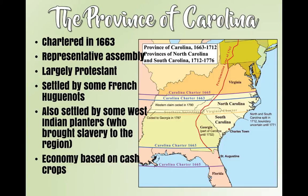Let's talk about the Province of Carolina. The Carolinas — it's basically a two-for-one deal. It's going to start as one colony and then eventually be split into two, not until 1729, so way down the road. But originally it's chartered in 1663, has a representative assembly similar to Maryland's, and a lot of Protestants.